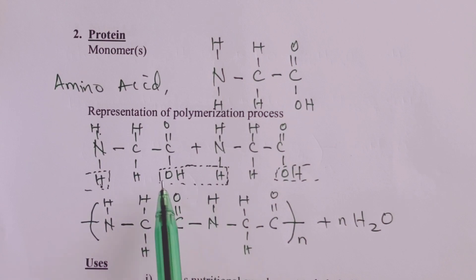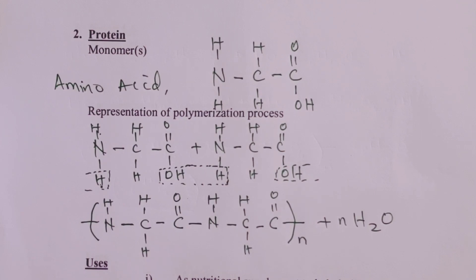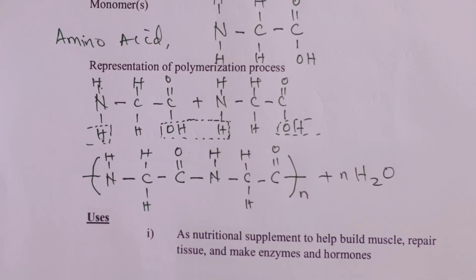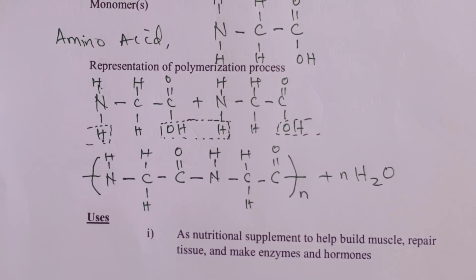It is very easy to obtain from our two molecules of monomers, which we have used to illustrate the polymerization process. Protein is a nutritional supplement that helps the body to build muscle, repair tissue, make enzymes, and even hormones. We do have protein powder as a food supplement, though in many of the foods that we eat we also obtain natural protein.